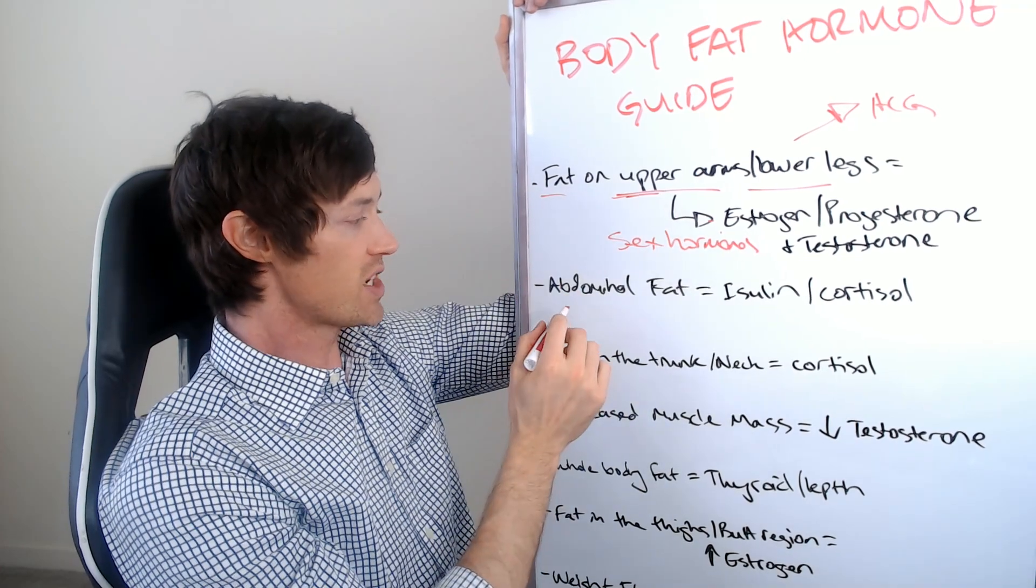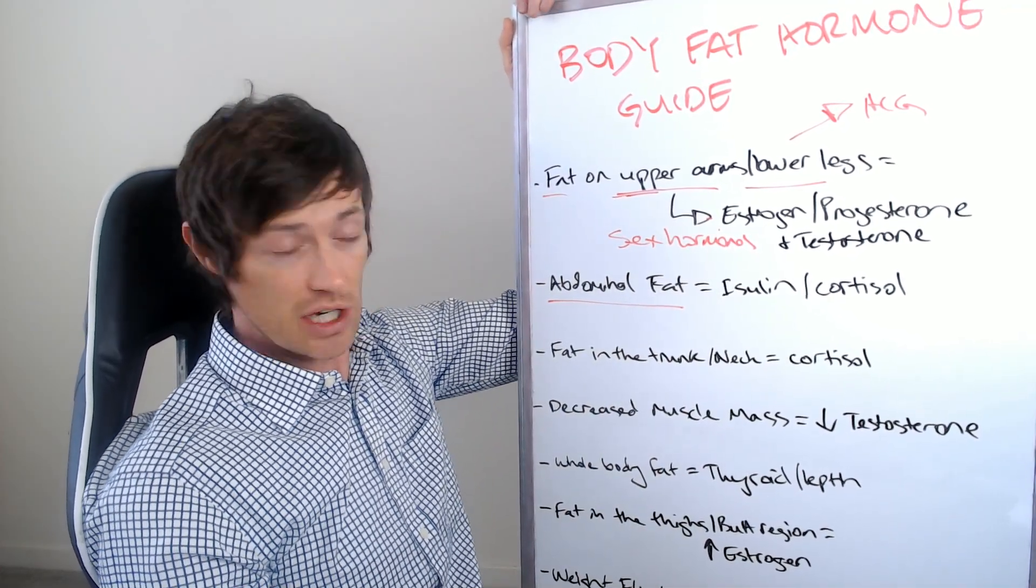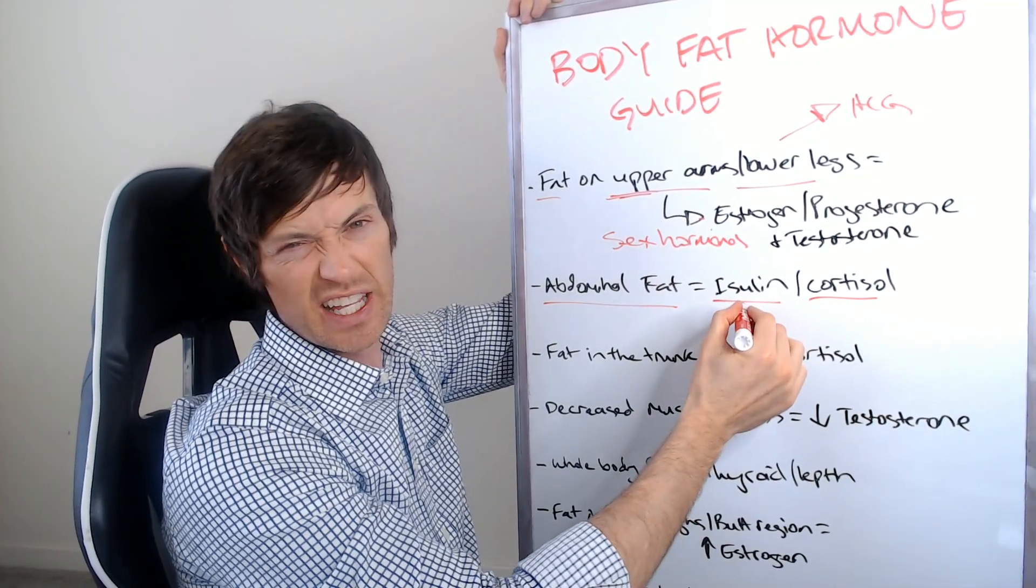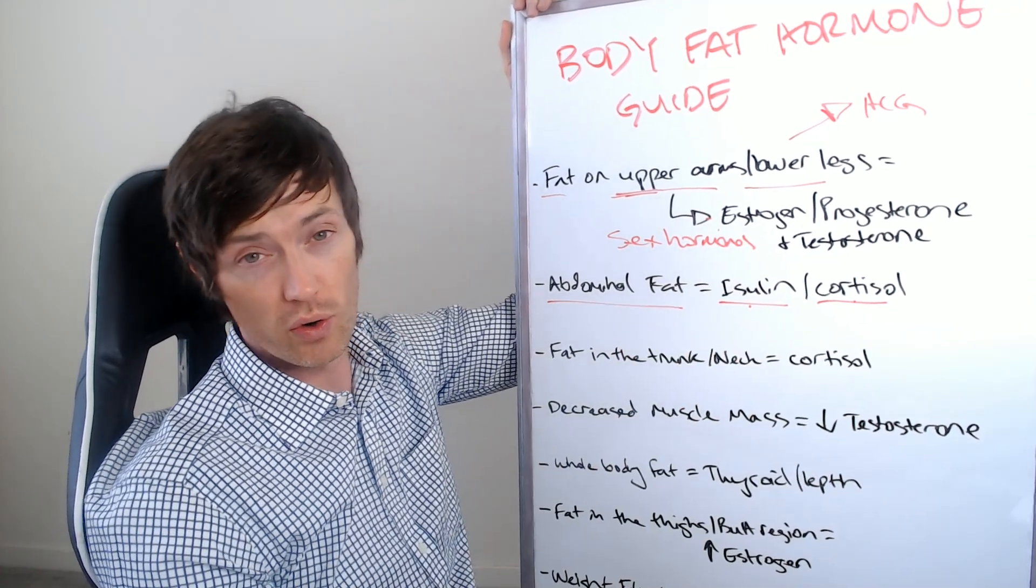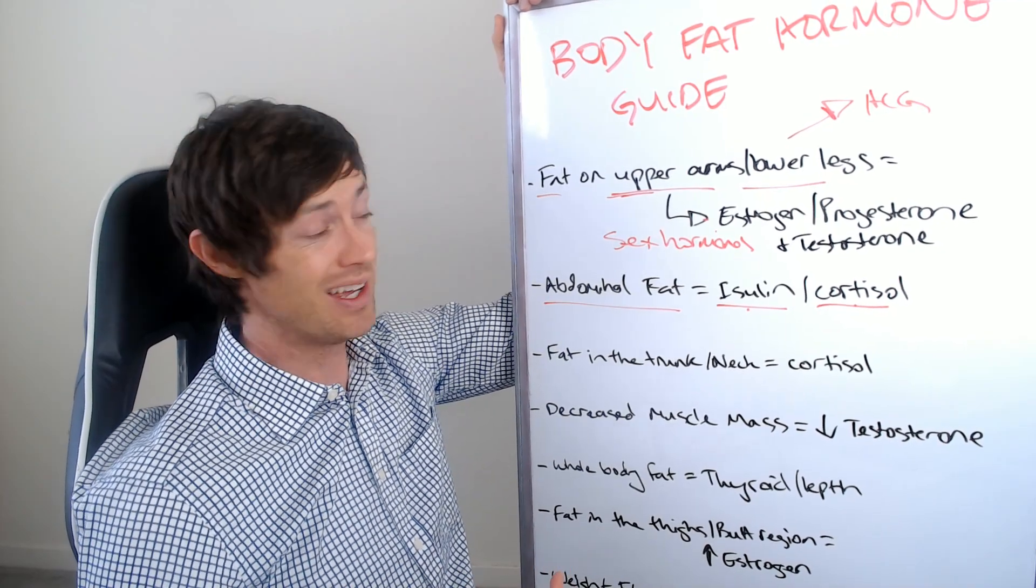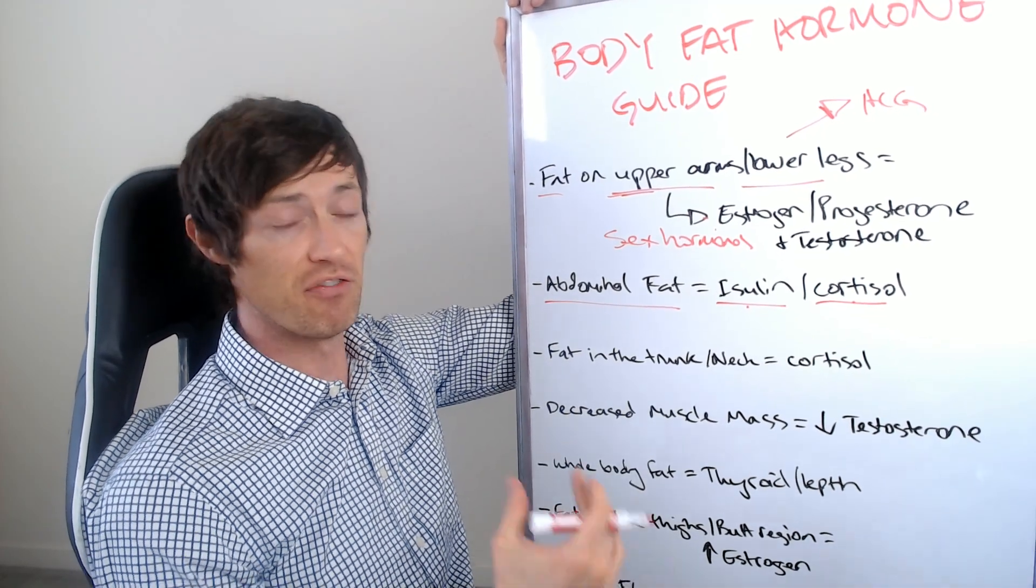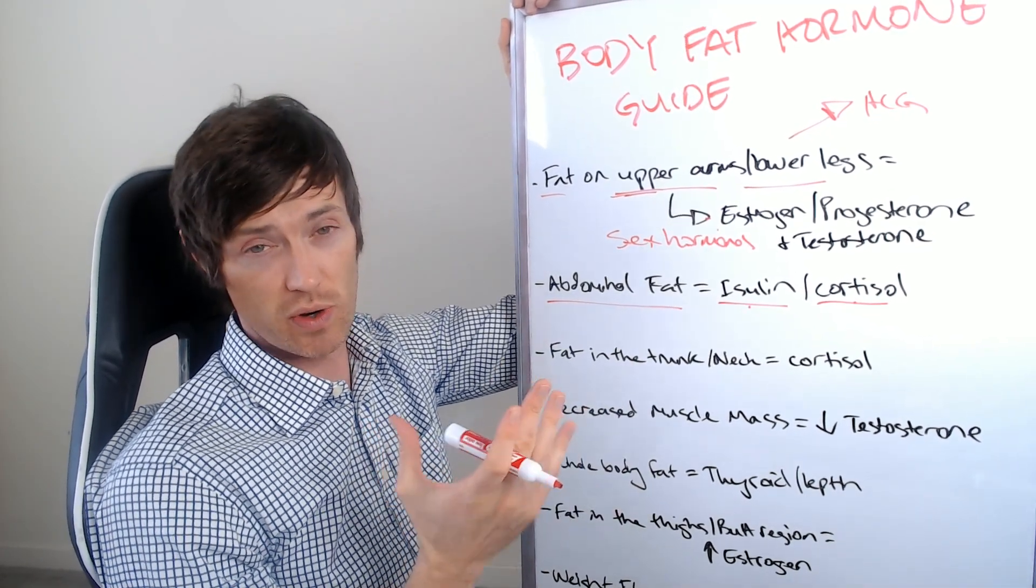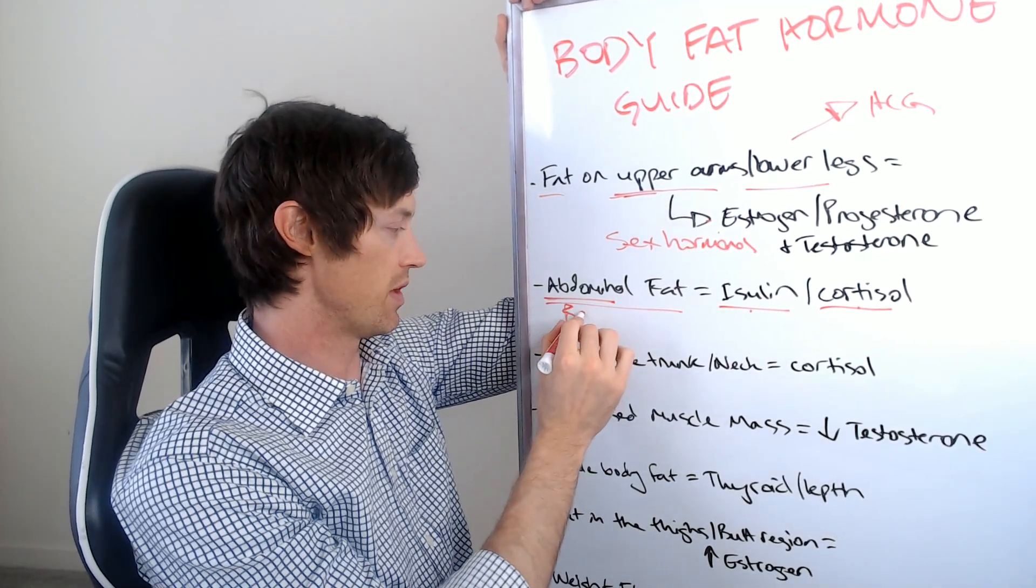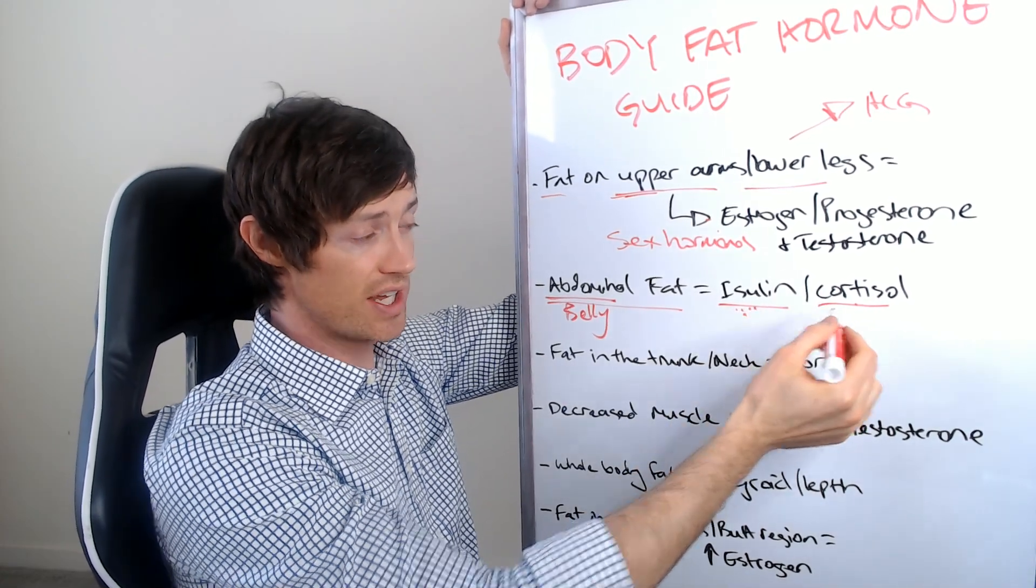The next one would be abdominal fat. Now this one is pretty straightforward and usually correct. And it usually is an indication that you have one or both of these problems and that is insulin, usually insulin resistance and/or cortisol, which would be an adrenal problem. So abdominal fat means that you just have fat in the belly area. It's very likely to be related to insulin and/or cortisol.